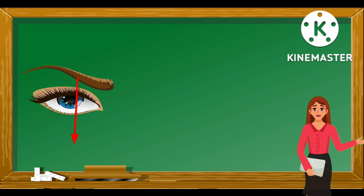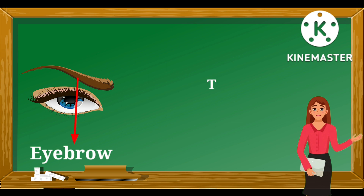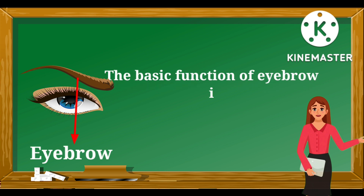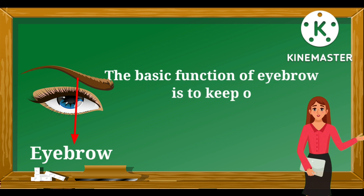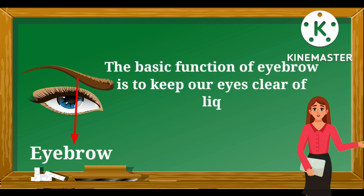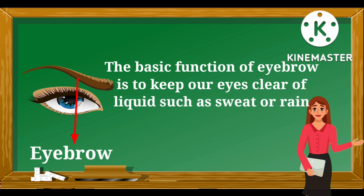This is an eyebrow — E-Y-E-B-R-O-W. It is located at the junction of the forehead and the upper eyelid. The basic function of the eyebrow is to keep our eyes clear of liquids such as sweat or rain.